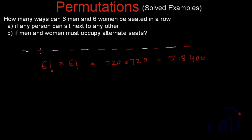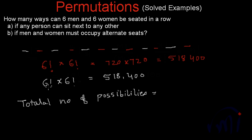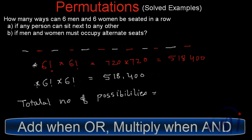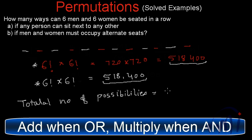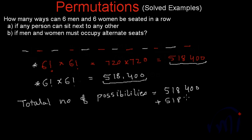There is one more possibility: men occupying the red places and women occupying the white places. There will also be 6 factorial multiplied by 6 factorial number of possibilities, which is also equal to 518,400. So the total number of possibilities will be either this arrangement or that arrangement — both cannot happen at the same time, so these possibilities are added. It will be equal to 518,400 plus 518,400, which equals 1,036,800. So there are these many ways in which six men and six women can occupy alternate places.